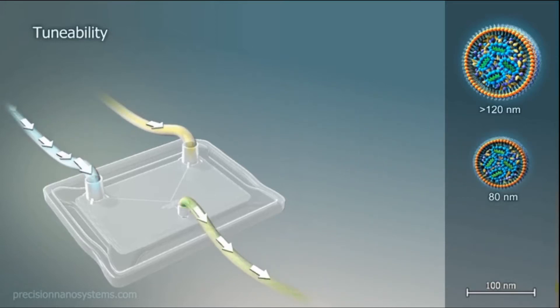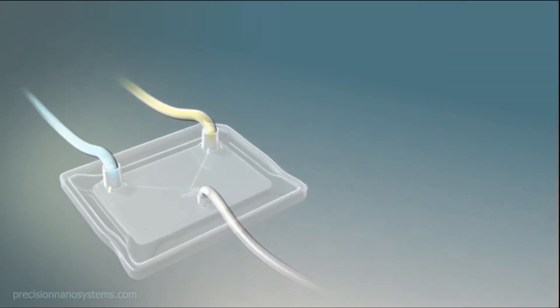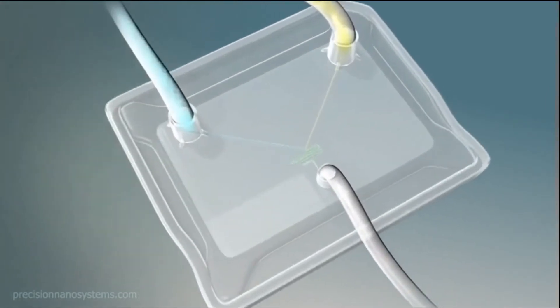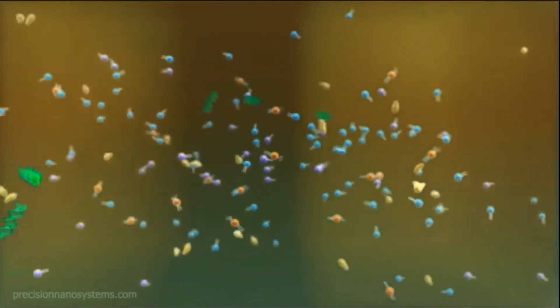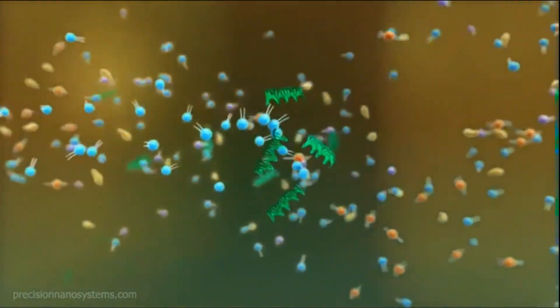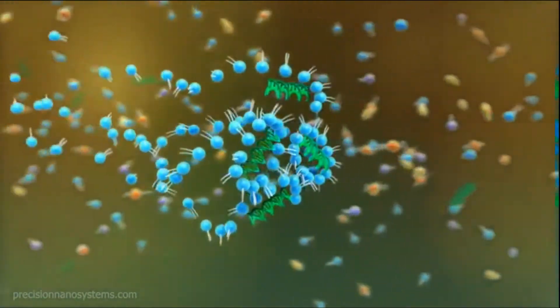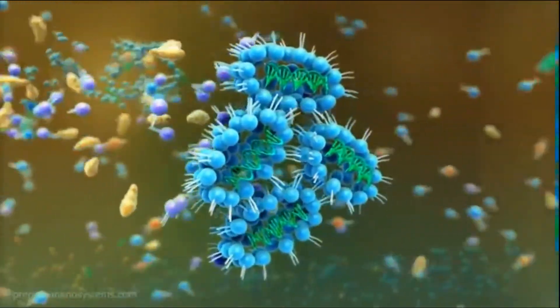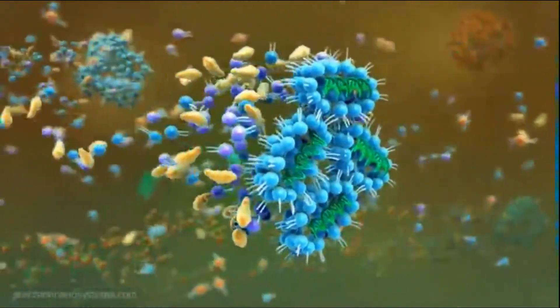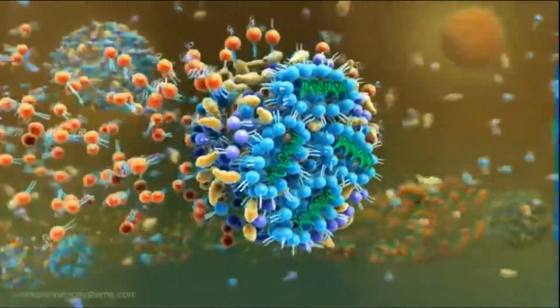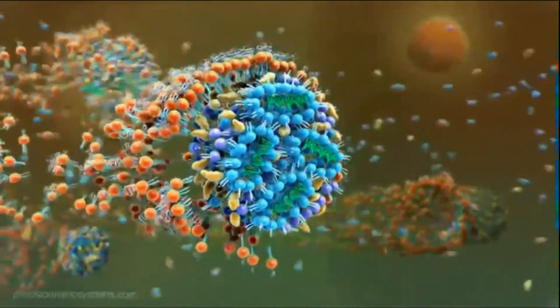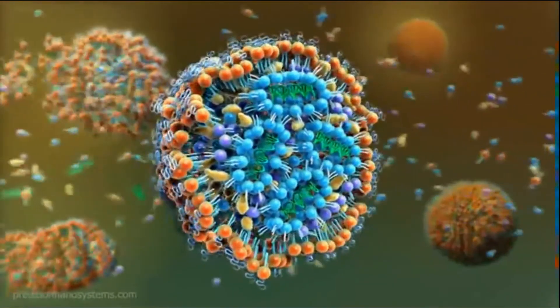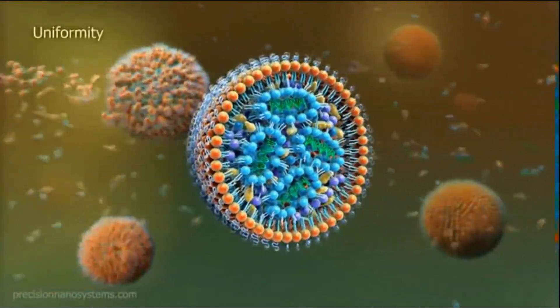The nucleic acid of interest is fed through one inlet and the lipid components are fed through the second. Encapsulation of the genetic material in a dense lipid core occurs on the nanoliter scale in a millisecond time frame. Tuning input parameters such as flow rate ratios and lipid components enables predictable size control.